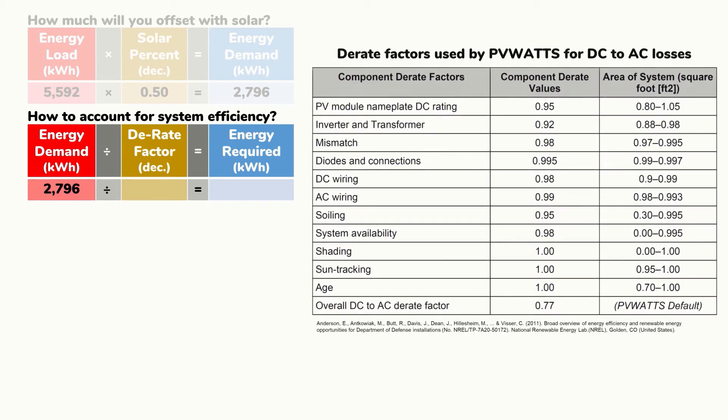Now we'll divide this revised energy value by a derate factor that accounts for the efficiency of the entire electric system. Derate factors account for losses from voltage drop within DC or AC wiring, shading on the panels, or dust and bird droppings blocking sunlight. To account for these losses we'll use a derate factor of 0.77, in accordance with models used by the National Renewable Energy Lab. Dividing by 0.77 gives us a resulting value of 3,631 kWh — the energy needed to provide 50% of our electrical needs.